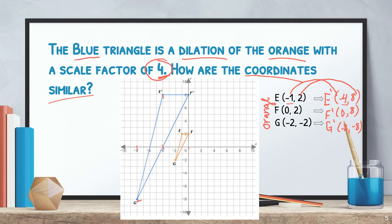How can we get from negative one to negative four? How can I get from two to eight? We can see that negative one times four equals negative four, and two times four gives me eight. So if we have a dilation with a scale factor of four, I'm going to multiply each of my coordinates by four to find the new coordinates.